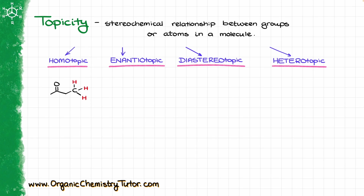These three hydrogens are absolutely chemically identical, so we are going to say that these hydrogens are homotopic. I can prove that these hydrogens are homotopic by replacing each of them with an imaginary atom like an X, and see what sort of relationship I get with the resulting molecules.